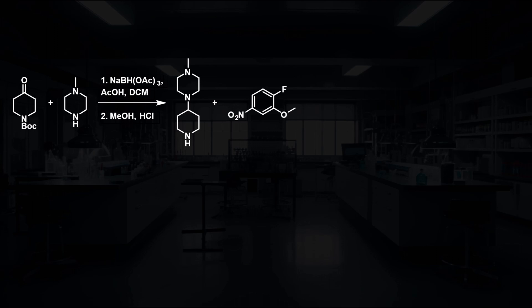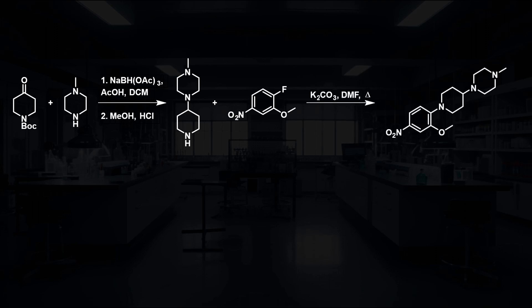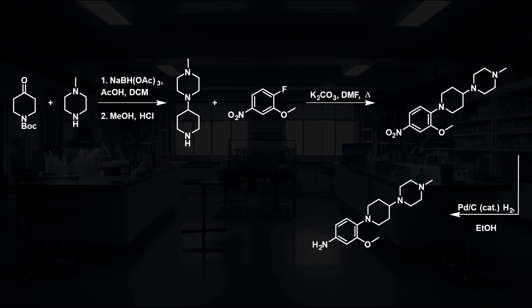Treatment with HCl removes the Boc protecting group and allows for an SNAr reaction, with the nitro group activating the para position for substitution. Reduction using hydrogen and a palladium over charcoal catalyst then reduces the nitro group to the corresponding aniline.